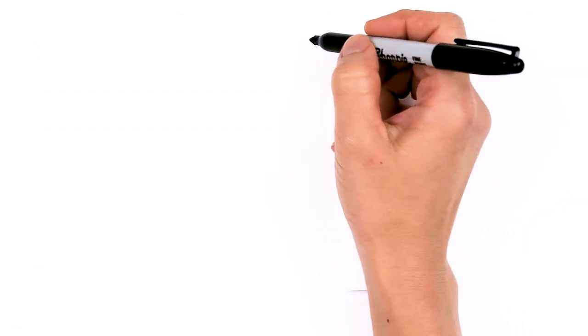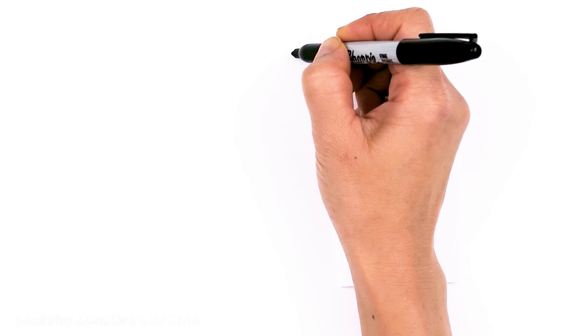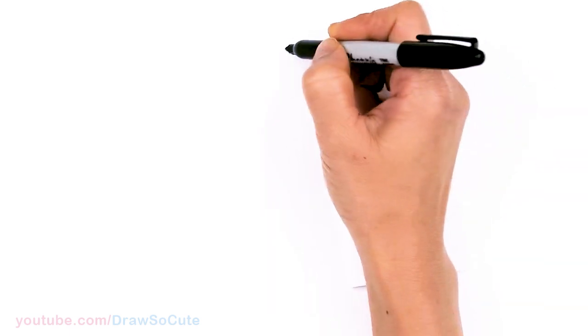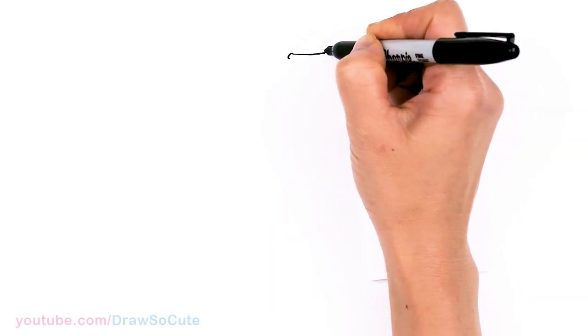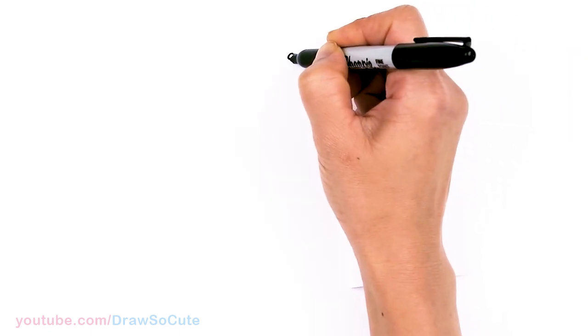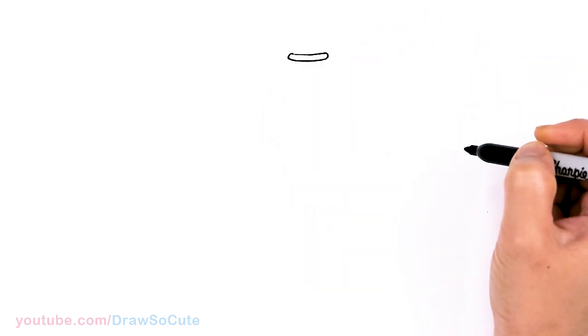To draw this Coke bottle let's first start by drawing a curve for the lip of the bottle. Right here I'm going to start with a soft curve about that much and then I'm going to come to the sides and curve it.